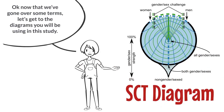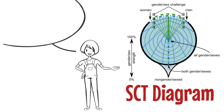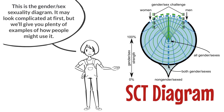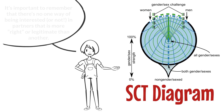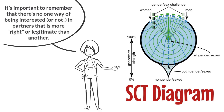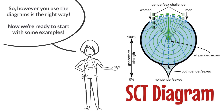Now that we've gone over some terms, let's get to the diagrams you'll be using in this study. This is the gender sex sexuality diagram. It may look complicated at first, but we'll give you plenty of examples of how people might use it. It's important to remember that there's no one way of being interested or not in partners that is more right or legitimate than another, so however you use the diagrams is the right way.